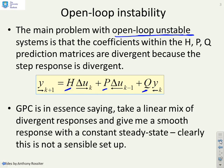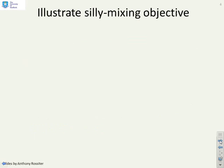Therefore what GPC is trying to do is take a linear mix of divergent responses in order to give a smooth response with a constant steady state, and clearly this is not sensible — I'll demonstrate this on a graph here.